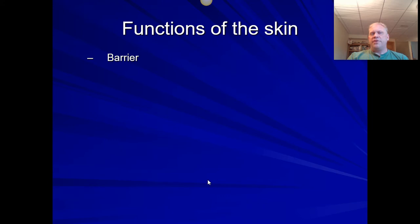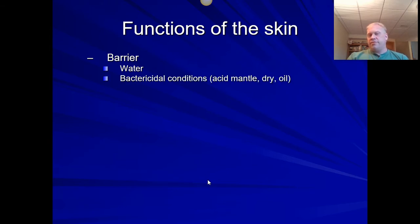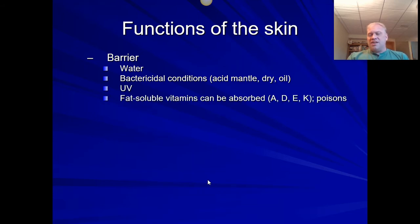A lot of people fumble on this when asked about the seven functions of the skin. It protects us — it serves as a barrier against water loss or water coming in. It serves as a barrier for bacteria because we have dry skin and it serves as an acid mantle, with an oil layer that makes it bactericidal. It's a barrier against UV radiation, and it selectively allows some things in, like fat-soluble vitamins. Even some toxins can go through the skin, so it's certainly not sealed shut against everything.